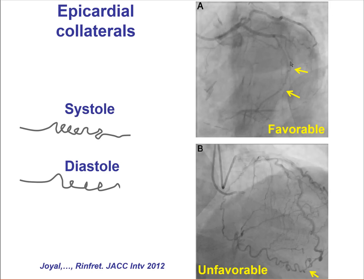Here is an example of a favorable epicardial collateral — large caliber and minimal tortuosity. On the bottom picture is the image of a very tortuous collateral that is unfavorable for a retrograde approach. This is what happens during systole, where the collateral gets compressed, and during diastole, where it opens up. The goal is to allow wire advancement preferentially during diastole, when the tortuosity becomes less.